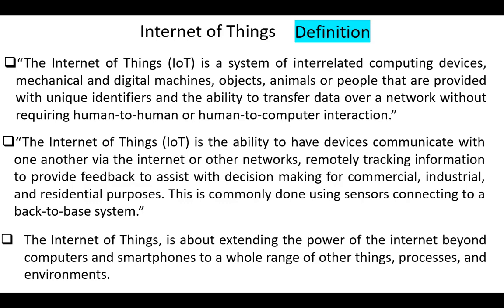Another definition: the Internet of Things is the ability to have devices communicate with one another via the Internet or other networks, remotely tracking information to provide feedback to assist with decision-making for commercial, industrial and residential purposes. This is commonly done using sensors connecting to a back-to-base system.